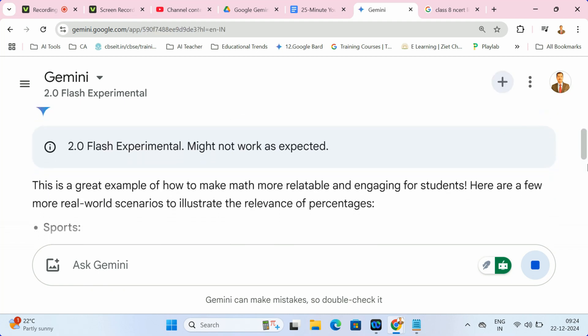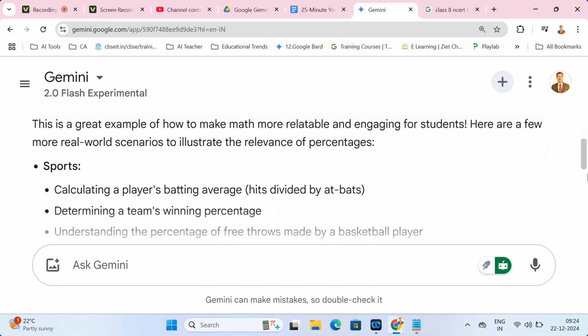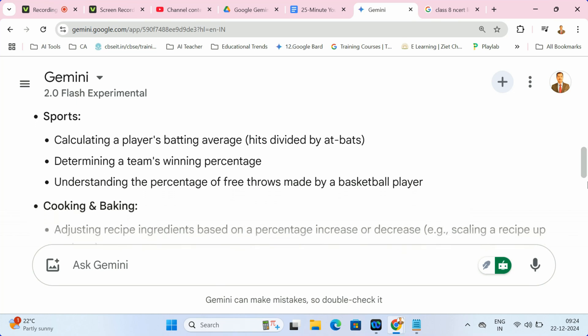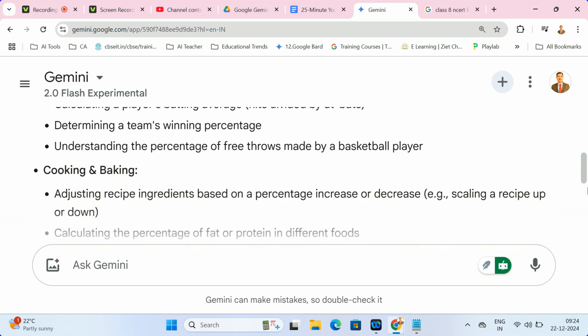For percentages, Gemini might suggest scenarios like calculating discounts while shopping or figuring out the tip at a restaurant. Suddenly, students see why math matters beyond the classroom.